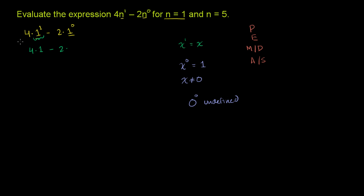So with that said, 1 to the 0th power is just going to be 1. Anything other than 0 to the 0th power is 1. So we have 4 times 1, which is 4, minus 2 times 1, which is 2. So 4 minus 2 is equal to 2.